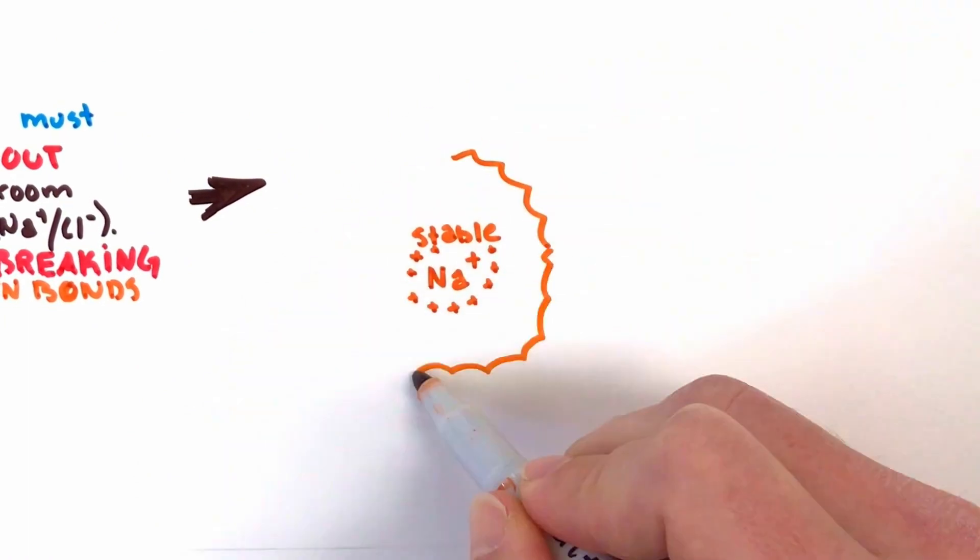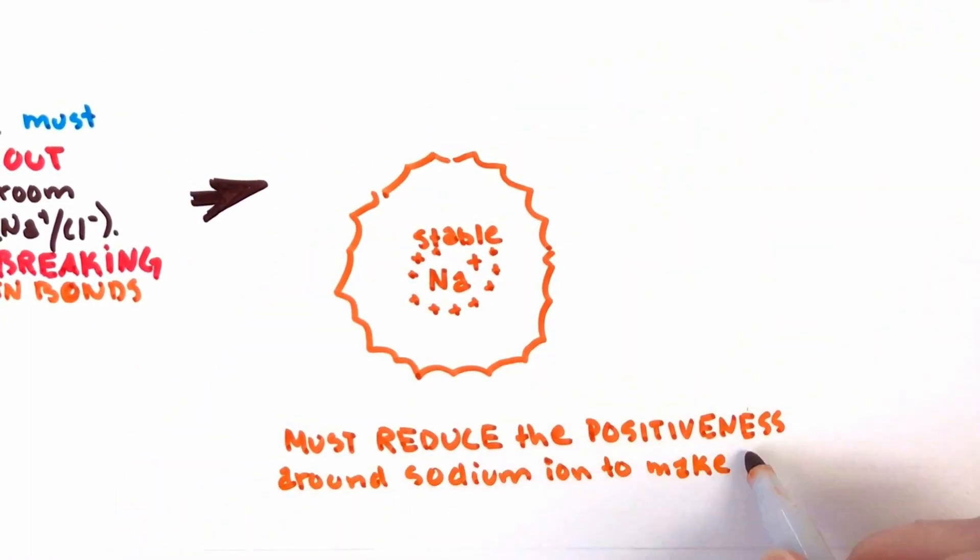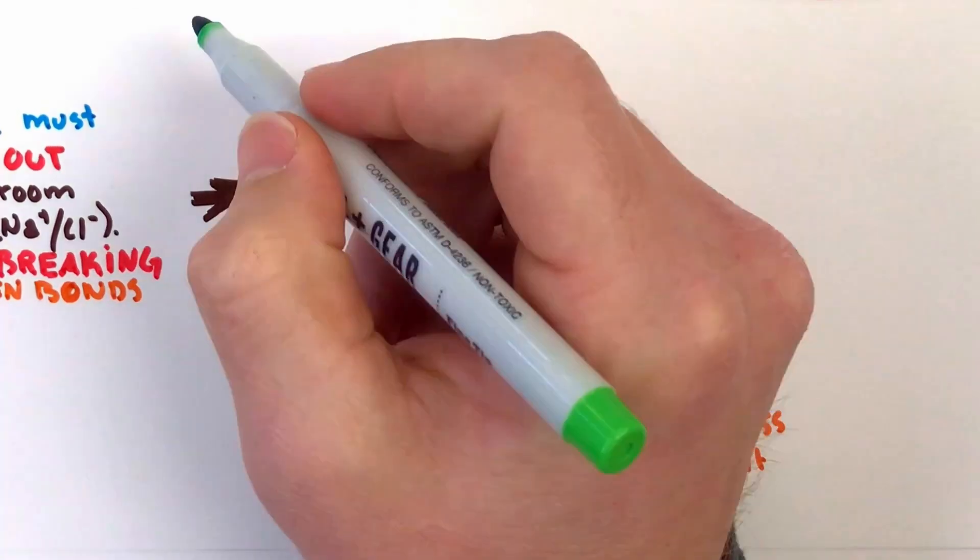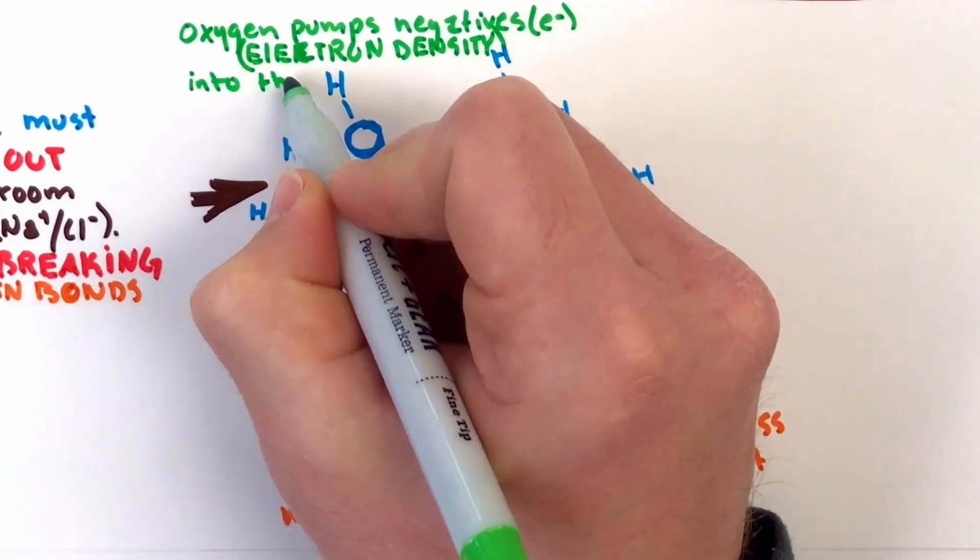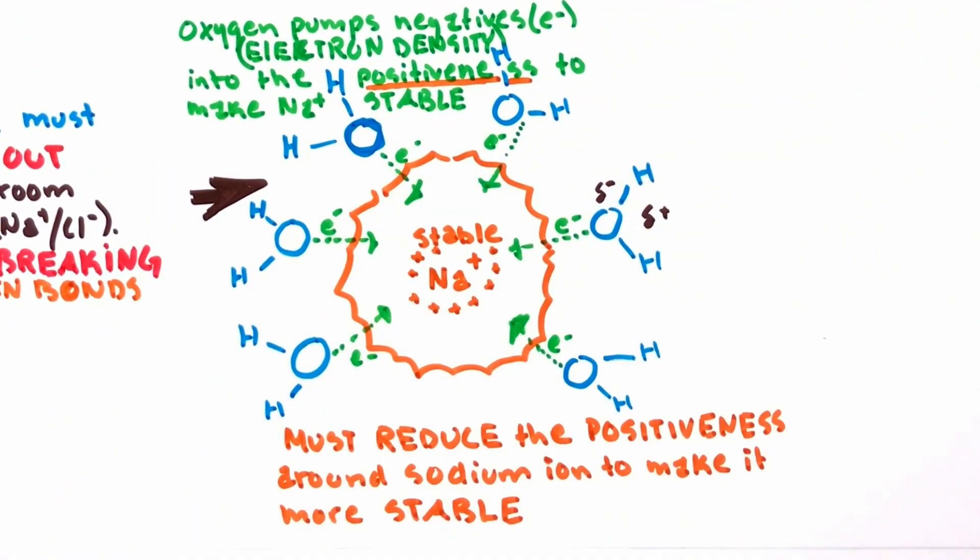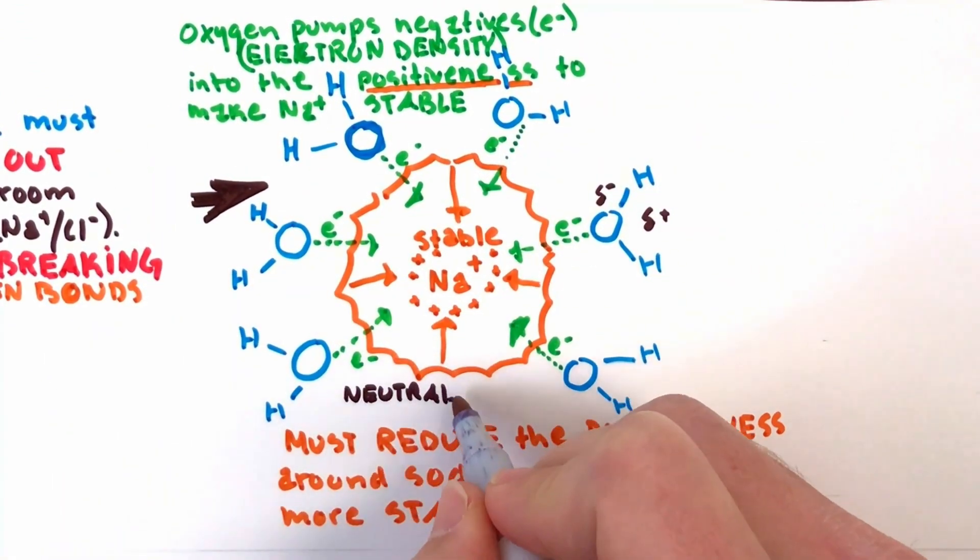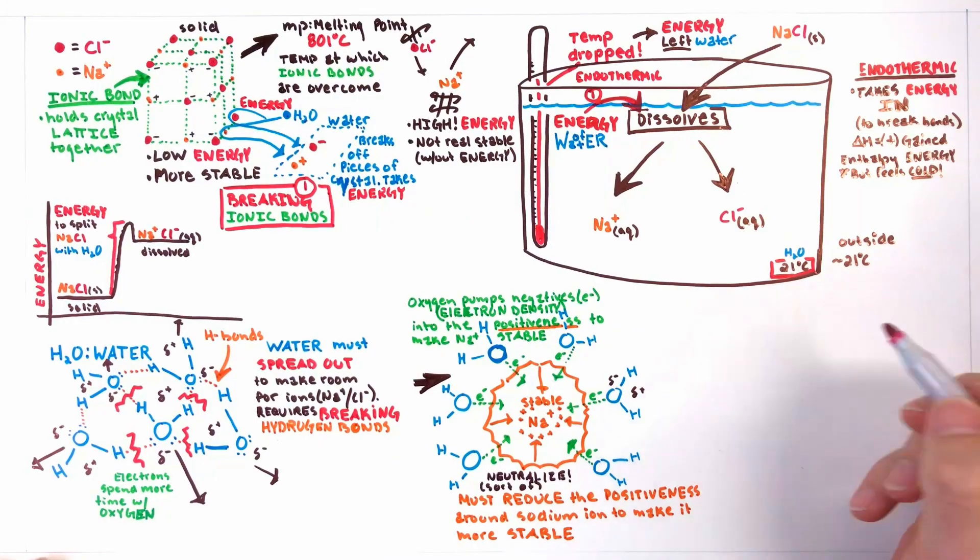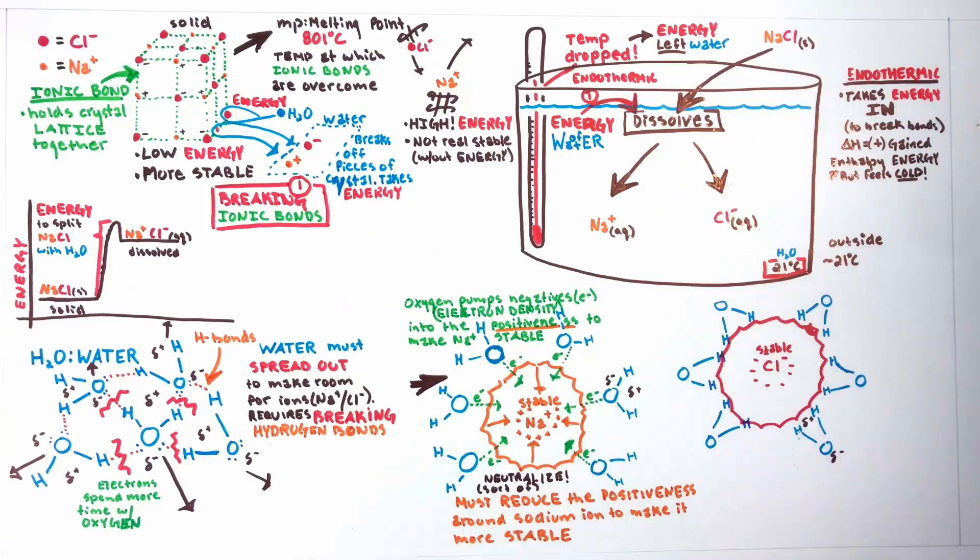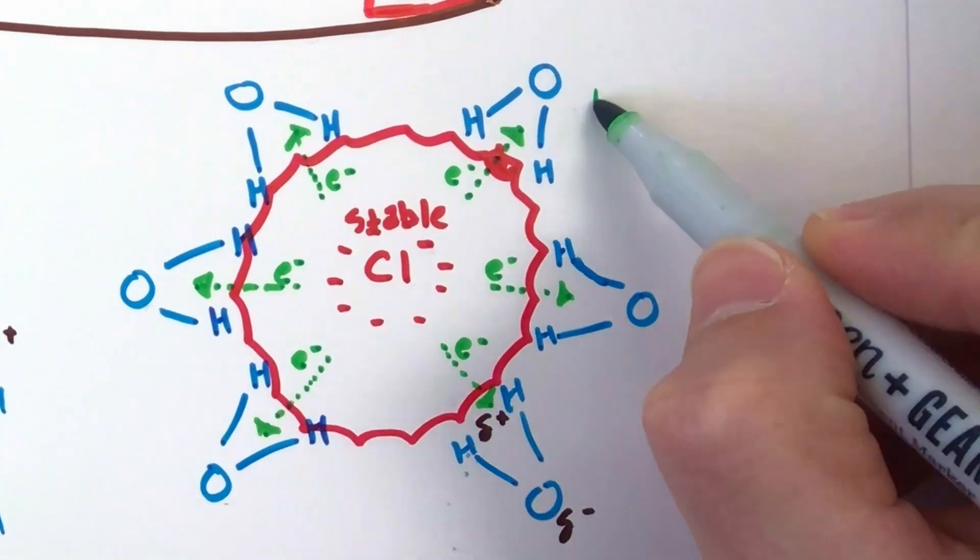Nature must reduce the positiveness around the sodium ion to make it more stable. This is accomplished by water surrounding the sodium with the negative oxygens, so the oxygens can pump negatives or electron density into the positiveness of the sodium ion, making it more stable, sort of like all the waters working to neutralize the sodium. The opposite happens with the negative chloride. Partially positive hydrogens surround the chloride and absorb negativeness, helping to make it more neutral and stable.